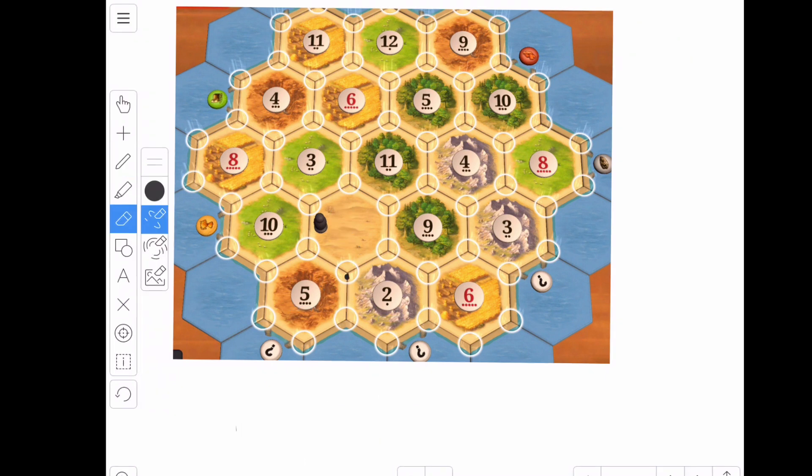So using that point system to measure the probability of getting resources from a certain spot is really useful. It's going to help you maximize the resources you get, make really good decisions for your opening settlements and also where you're going to build or upgrade, but it's not the only consideration.